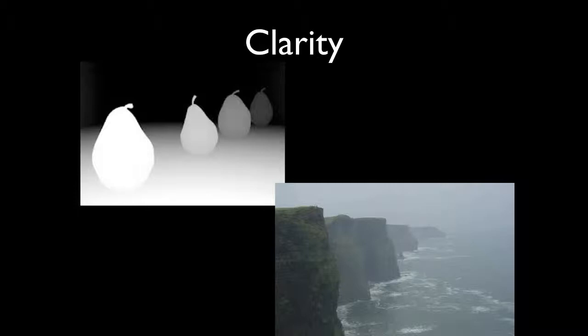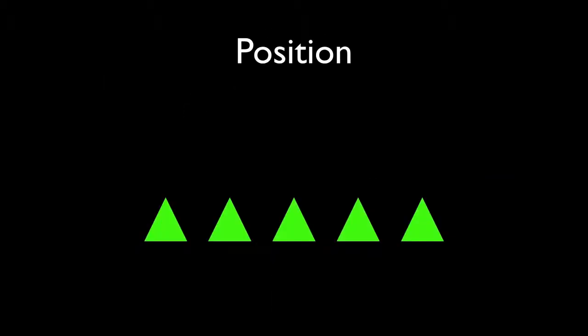Here are some clarity examples. As pears get farther and farther away they become less and less clear — getting darker and darker. On the mountains or cliffs at the ocean, they get lighter and lighter as they approach the background. Notice it's not specifically about getting lighter or darker — the pears get darker, the cliffs get lighter. It's all about becoming less clear and more like your background color.